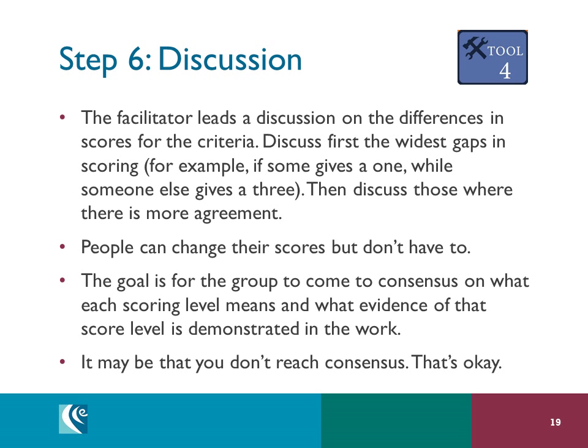Now the facilitator leads a discussion on the differences in scores for the criteria. Discuss first the widest gaps in scoring — for example, if someone gives a 1 while someone else gives a 3, you would discuss that first. Then discuss those that were more in agreement. You are allowed to change your scores during this time, but you don't have to, and the goal is to try to reach consensus. But if you don't reach consensus, that's okay.